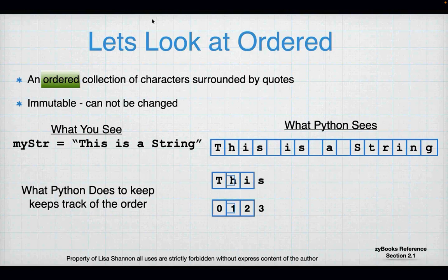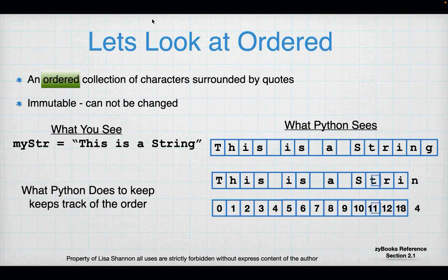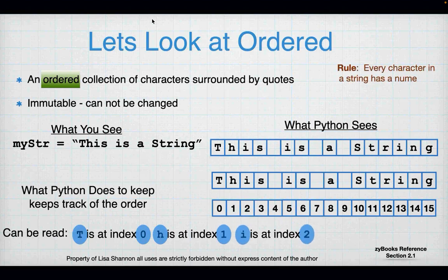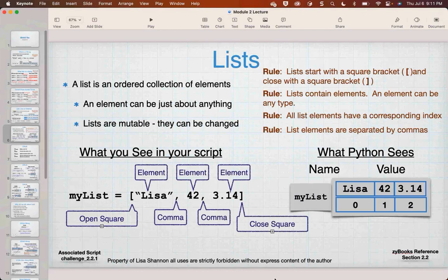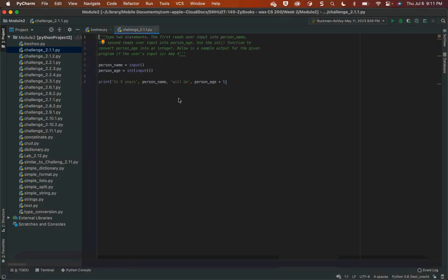So this is ordered — Python reads T at index 0, H at index 1, I at index 2 and so forth. Let's go back and look at some syntax for strings. Here's a string called boohoo. I want you to see some errors, because some errors are intuitive and some aren't.